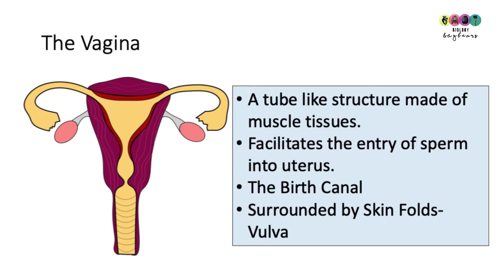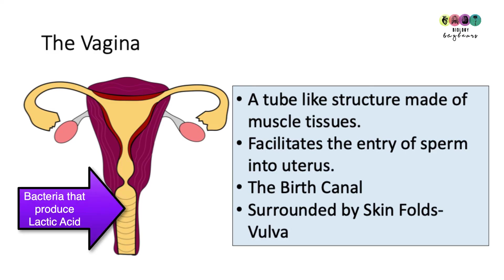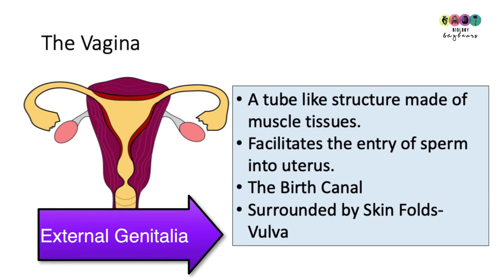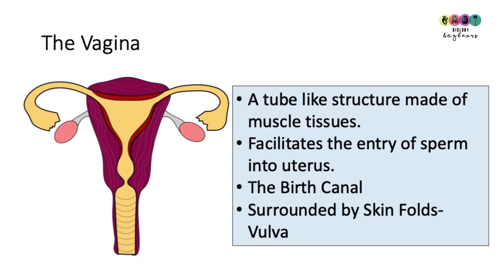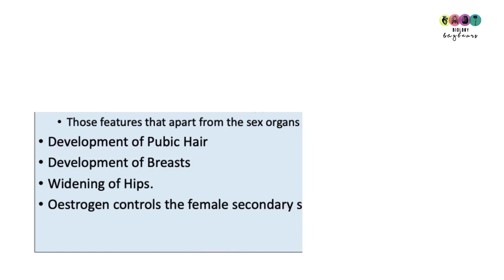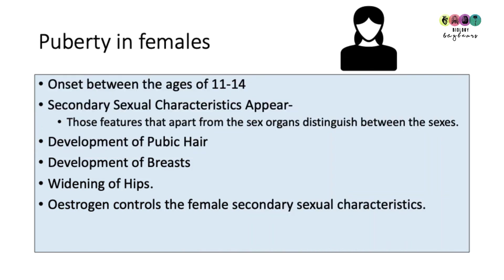The vagina is a tube-like structure made of muscle tissue, making it very elastic. It facilitates the entry of sperm into the uterus as it holds the penis during intercourse. It is otherwise called the birth canal, as the baby is delivered through the vagina. It also contains bacteria which produce lactic acid, part of the general defense system. Externally, it is surrounded by skin folds known as the vulva, which make up the external genitalia.